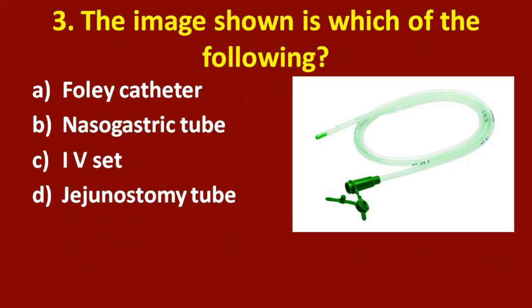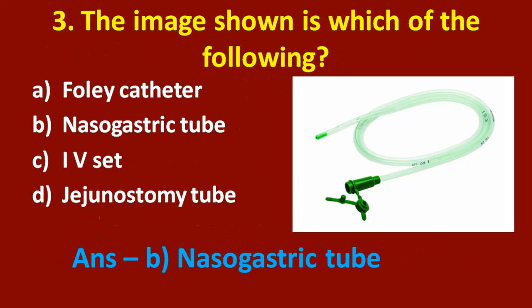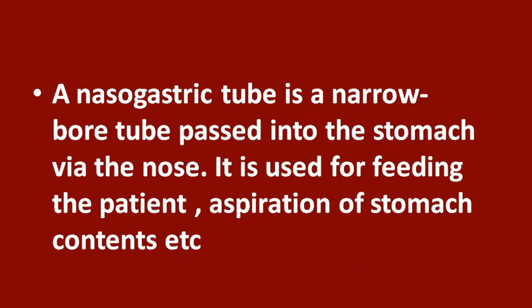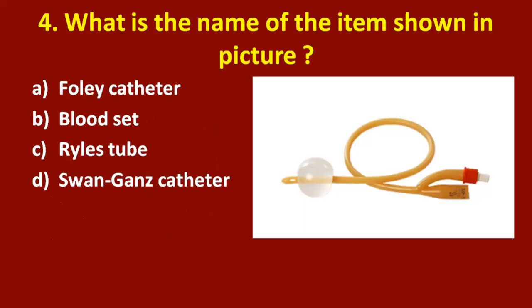Next question: what is shown in the picture? Option A: Foley catheter. Option B: nasogastric tube. Option C: IV set. Option D: jejunostomy tube. The answer is option B, nasogastric tube. A nasogastric tube is a narrow bore tube passed into the stomach via the nose. It is used for feeding the patient, aspiration of stomach contents, etc.